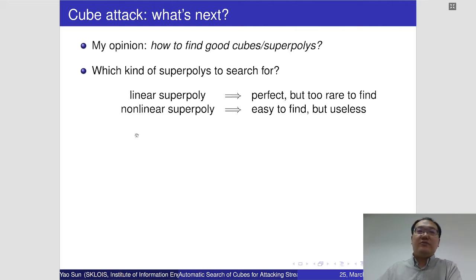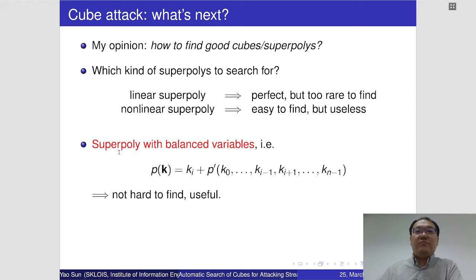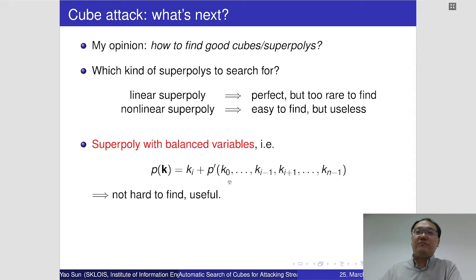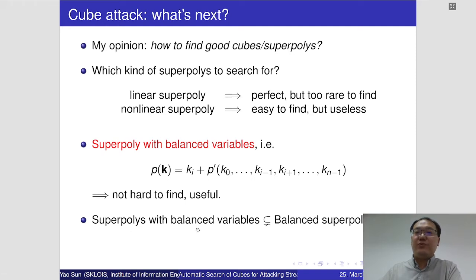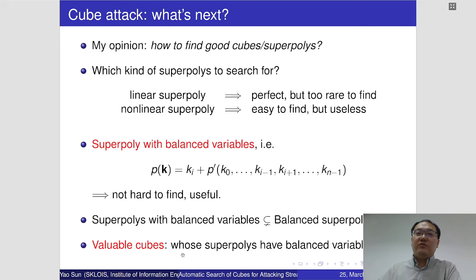We think we can find a special kind of nonlinear superpoly called superpoly with balanced variables. For example, in this form, the variable ki is a balanced variable and the monomials in the other part can be nonlinear. I believe there are a lot of these kinds of superpolys, much more than the linear ones. They are not hard to find and they are also very useful. Note that the superpoly with balanced variables must be a balanced superpoly. We call the cubes whose superpoly have balanced variables as the valuable cubes.